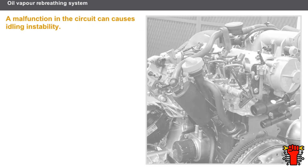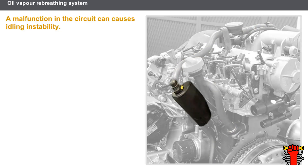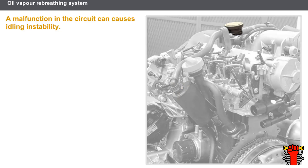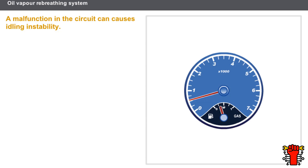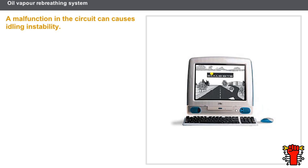The oil vapour rebreathing system requires the following checks: cleanliness and condition of pipes, cleanliness and condition of the separator filter, and operation of the pressure regulation valve. For example, a fault in the circuit can cause idling instability. In any case, always read the technical documentation.